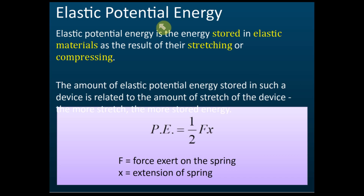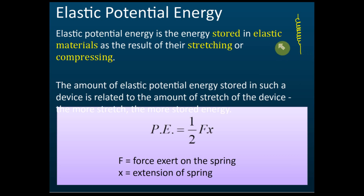Elastic potential energy is the energy stored in elastic material as the result of stretching or compressing that object. For example, a spring — if you stretch it or compress it, potential energy is stored inside. The amount of elastic potential energy is given by the formula PE equals half fx, but we will discuss this in the next lesson on elasticity. For now, just know there are two types of potential energy: gravitational and elastic.